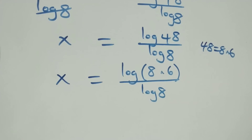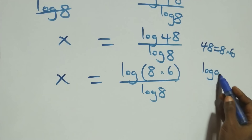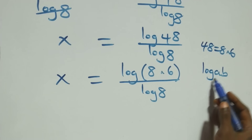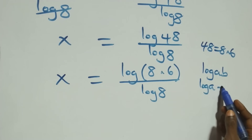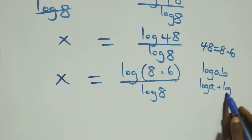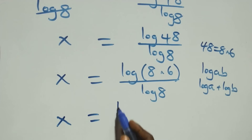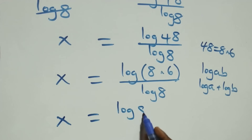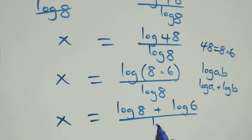Then, from what we have here, this follows the log product rule. When we have log(a × b), it's the same thing as log a plus log b. At this here, this becomes x equals to (log 8 + log 6) over log 8.